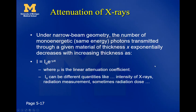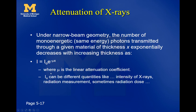Under narrow beam geometry, the number of mono-energetic photons transmitted through a given material of thickness x decreases exponentially as thickness increases. The basic x-ray attenuation formula is: I = I₀ · e^(−μx), where I is the intensity exiting a material of thickness x with attenuation coefficient μ, I₀ is the incident intensity, and μ is the linear attenuation coefficient — called 'linear' because it's in a straight line. The units of x are length and the units of μ are one per length — so if x is in centimeters, μ must be in inverse centimeters.